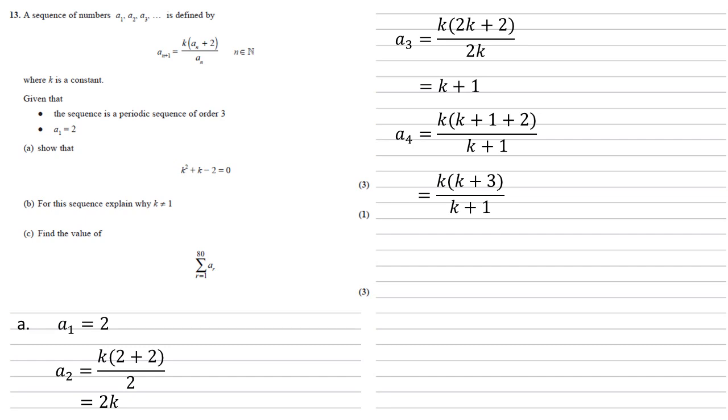Now we're told that the sequence is a periodic sequence of order 3, so A1 and A4 must be equal to each other. Hence K times K plus 3 all over K plus 1 equals 2, our first value for A1. Multiplying both sides by K plus 1 and expanding the brackets gives us K squared plus 3K equals 2K plus 2. Subtracting 2K plus 2 from both sides gives K squared plus K minus 2 equals 0 as required.